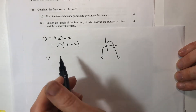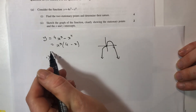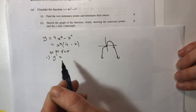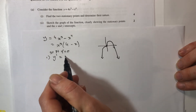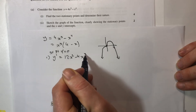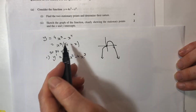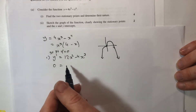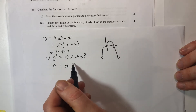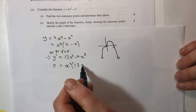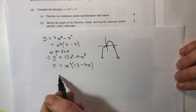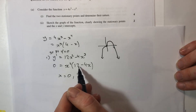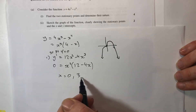For part one we've got to find the stationary points, so I need y dash. At a stationary point, y dash equals 0. Y dash is 12x squared minus 4x cubed — a pretty standard power function derivative. Setting 0 equal to that and factorizing: 4x squared times (3 minus x) equals 0, so x equals 0 or x equals 3.